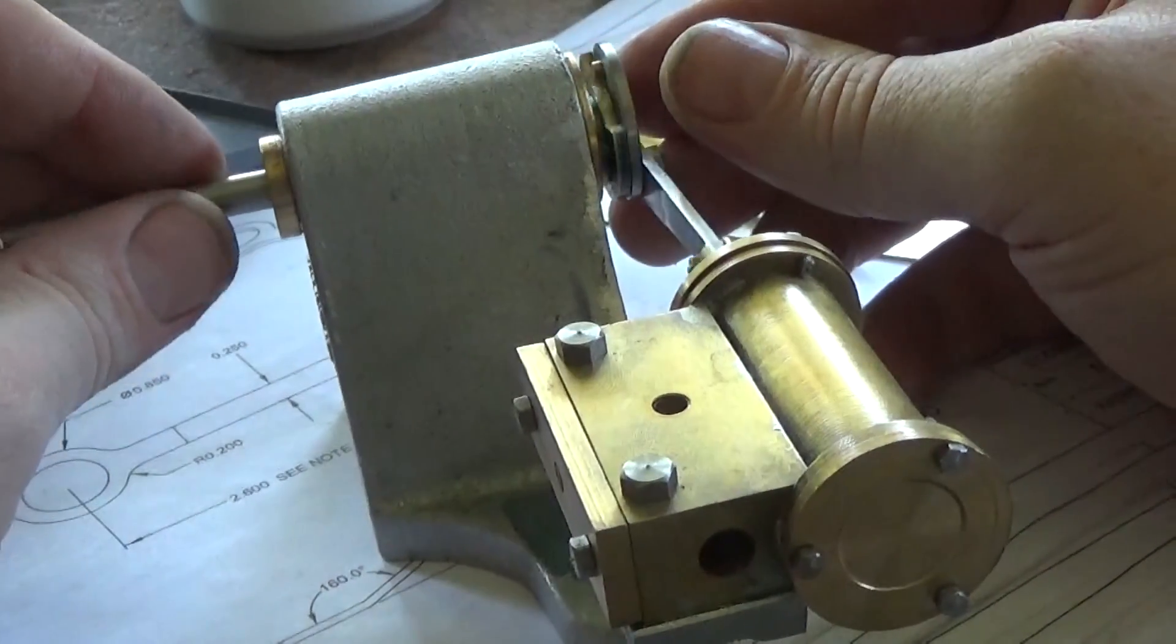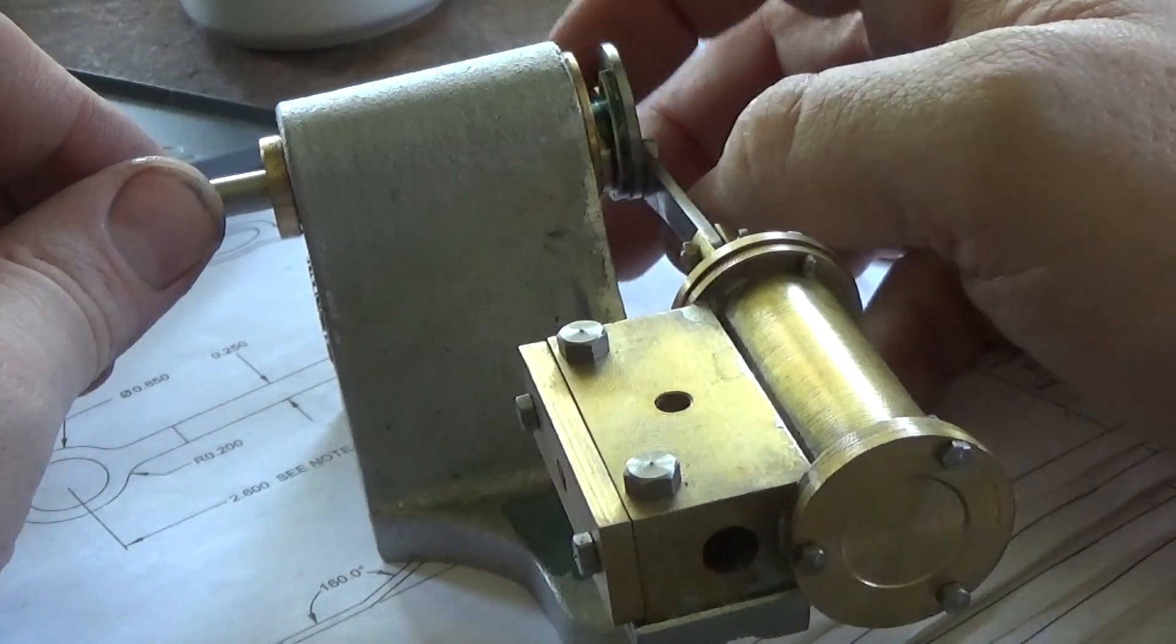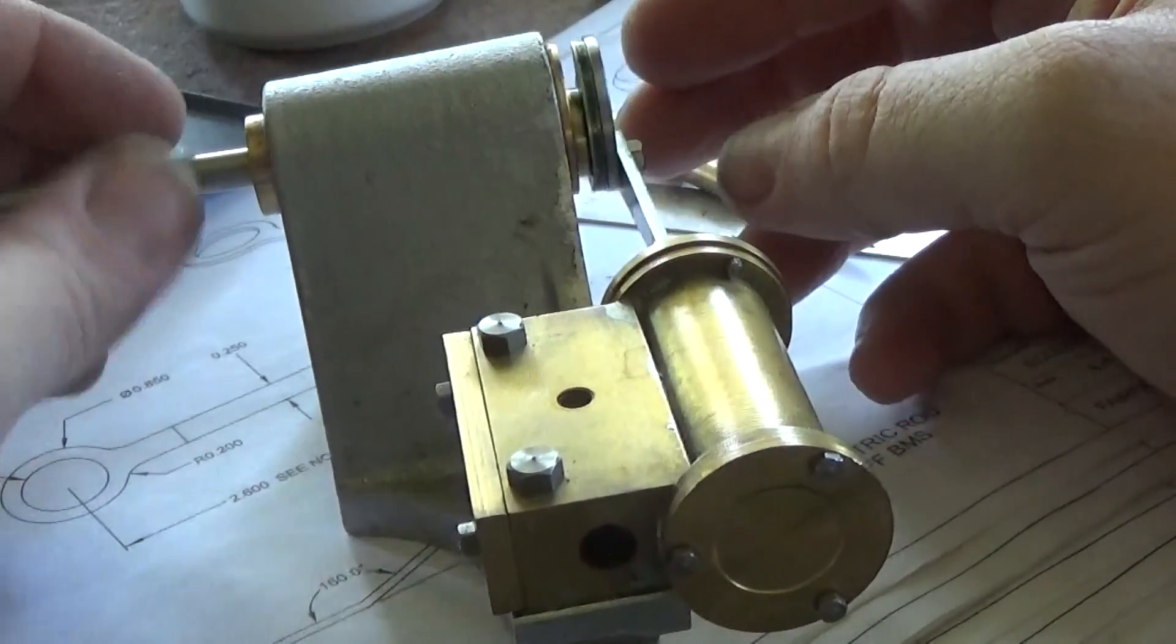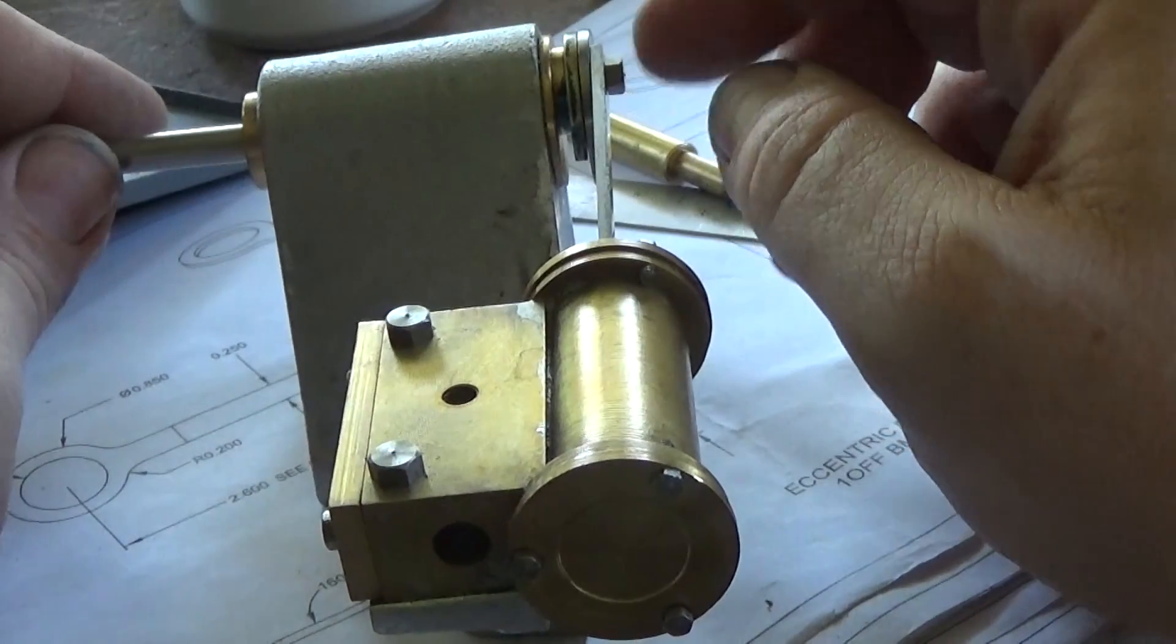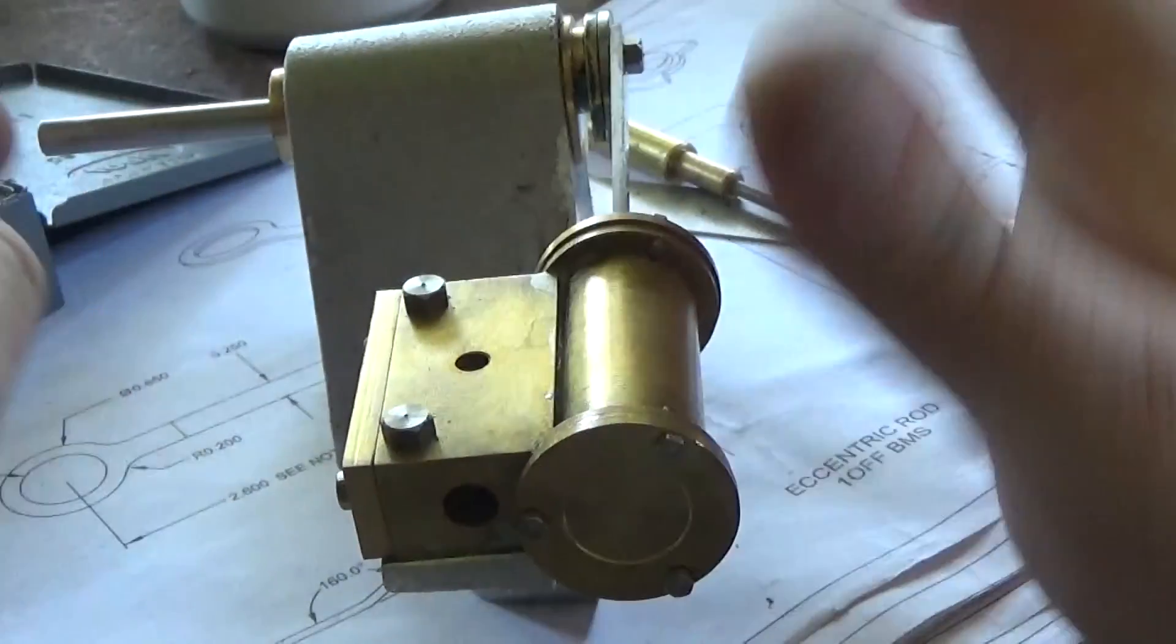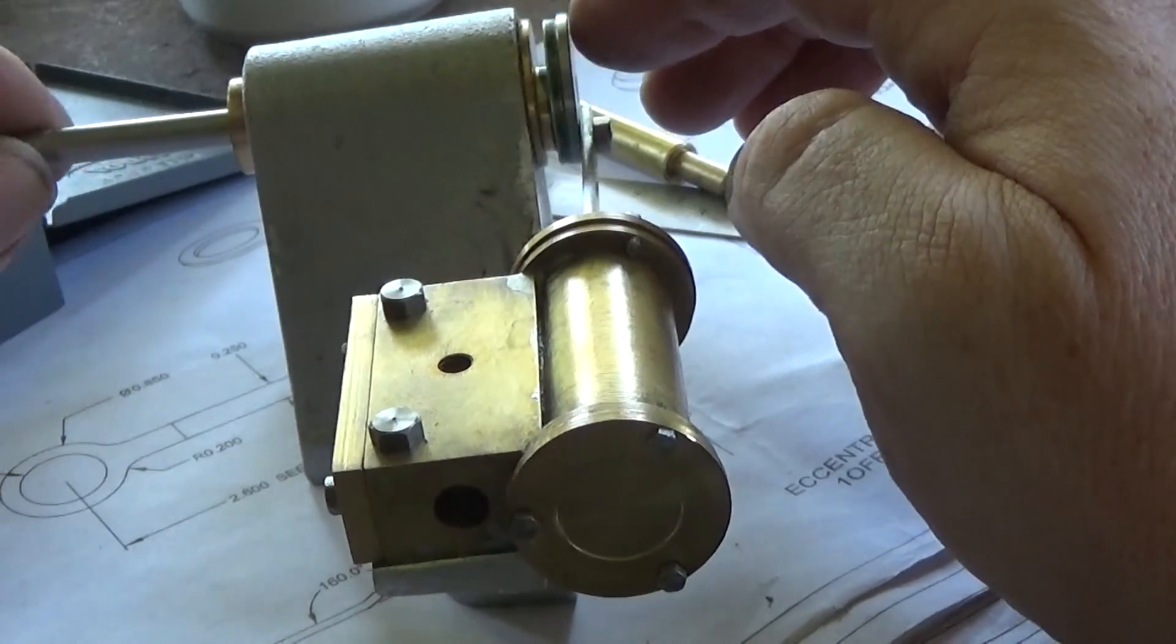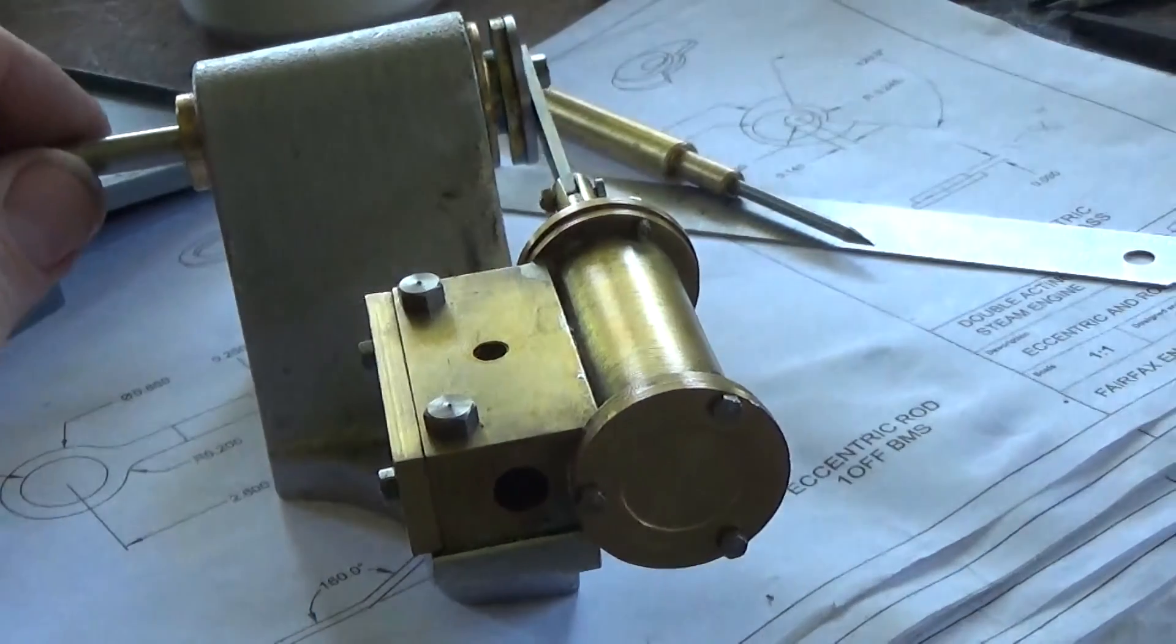Fingers crossed that it all goes together still. Everything's still loose here. And that's the slip eccentric. So there's not much more to do to this engine. It needs a rod here and the piston valve and some fittings—there's an oiler on top and a pipe underneath—and some paint, and we'll see if it goes. Thanks for watching, and more soon.